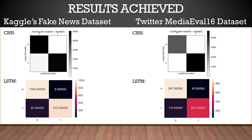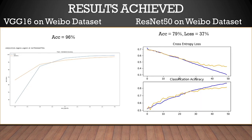We also present the confusion matrix for the CNN and LSTM models, where we compare the predicted and expected labels to get more accurate results, giving us insight into the real performance of the models. For the results achieved using pre-trained models VGG16 and ResNet50 — on the Vavio dataset containing rumor and non-rumor images — VGG16 achieves accuracy up to 96%. ResNet50 achieves 79% accuracy with a lowest loss equivalent to 37%. We also included CIFAR-10 in the evaluation, but ResNet50 does not achieve as high accuracy as VGG16.